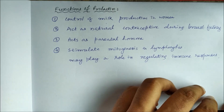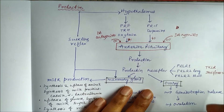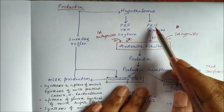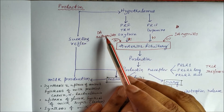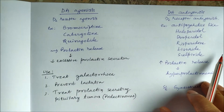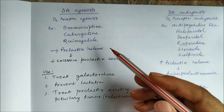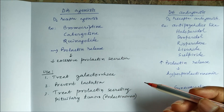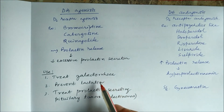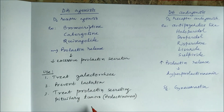Regarding drugs acting on prolactin: dopamine agonists (D2 receptor agonists) such as bromocriptine, cabergoline, and quinagolide all inhibit prolactin release and decrease excessive prolactin secretion. These can be used to treat galactorrhea (a condition of increased milk production), to prevent lactation, and to treat prolactin-secreting pituitary tumors (prolactinomas).